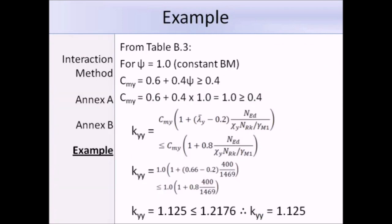CMY works out as 1, and we can put that into the equation for KYY along with all of the other values that I mentioned previously, and KYY then works out as 1.125. Now that we know KYY, we can put it into equation 6.61.